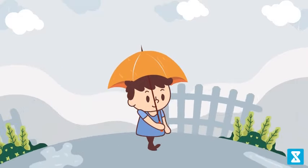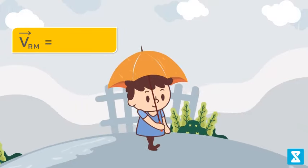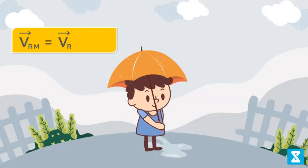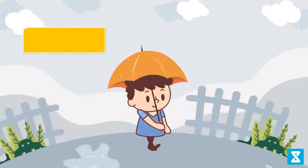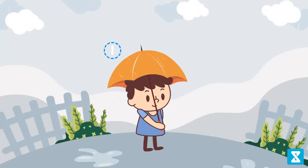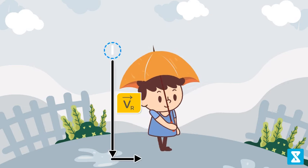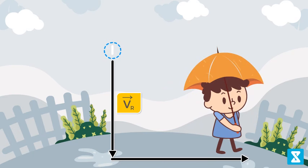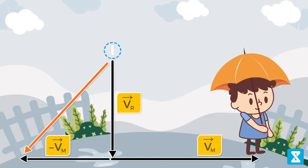The velocity of rain drops with respect to man, v_rm, is given by the relation: velocity of rain v_r minus velocity of man v_m. Let's consider this XY frame of reference. Since the rain is falling in the vertically downward Y direction, let's say v_r is a vector and the man is moving towards the right along the X direction with velocity v_m. So minus v_m vector would be in the minus X direction.